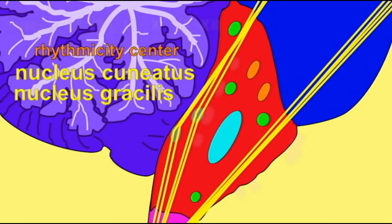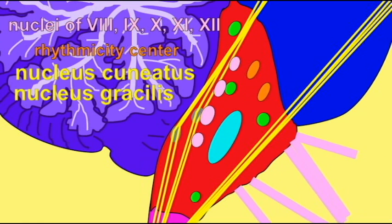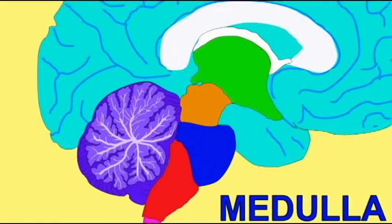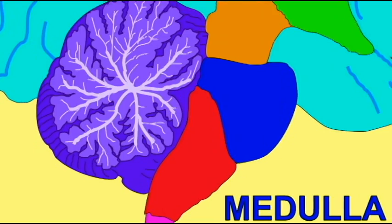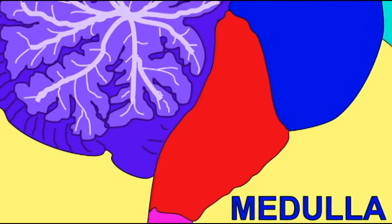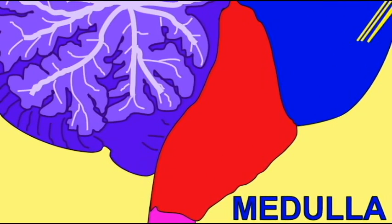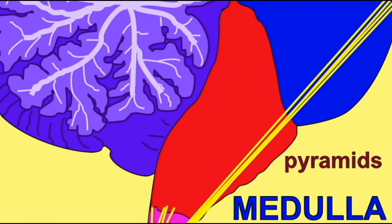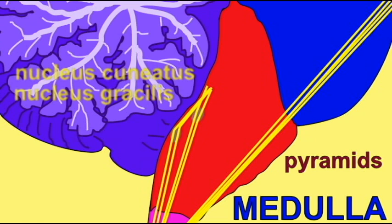The posterior column of the spinal cord carries touch information into the medulla, where it is organized in the nucleus gracilis and nucleus cuneatus, sorting out the leg and arm information respectively.